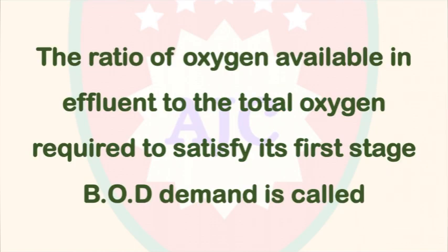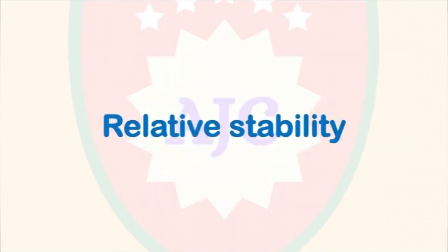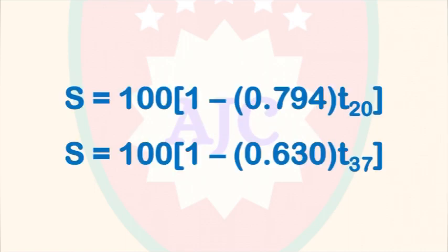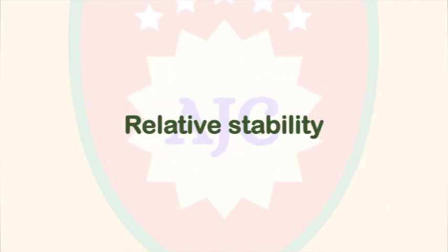The ratio of oxygen available in effluent to the total oxygen required to satisfy its first-stage BOD demand is called relative stability. The formula is: S = 100 × (1 − 0.794^T) at 20°C, or S = 100 × (1 − 0.630^T) at 37°C.